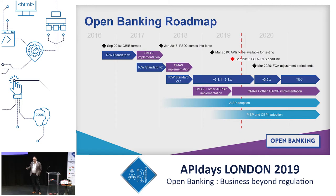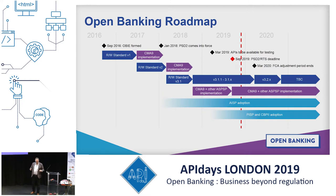And to allow particularly businesses that are using screen scraping and credential sharing to migrate customers onto open banking — that's kind of where we are now, we're partway through that process. We have been working on the standard for almost three years, and the CMA 9 — initially the nine largest retail banks in the UK — were mandated to follow the standard. They followed an early version of that with varying degrees of success, but we're now very much into a phase where we think at least a hundred banks are using the open banking standard.